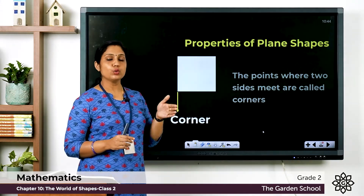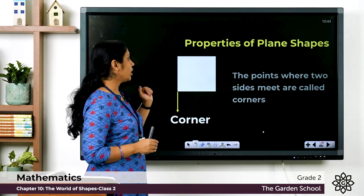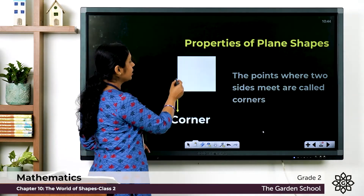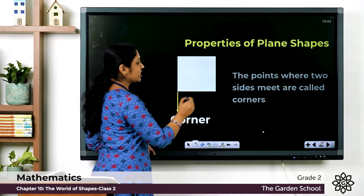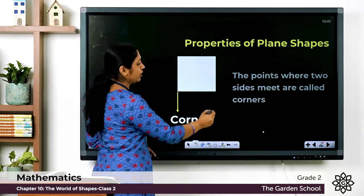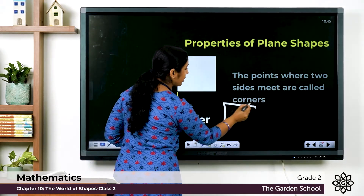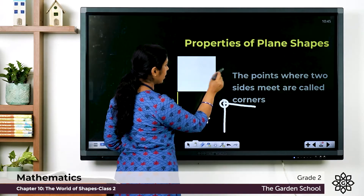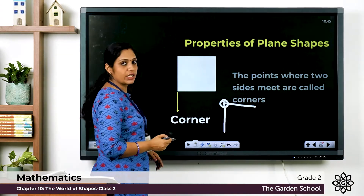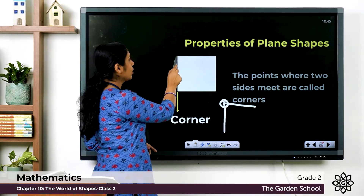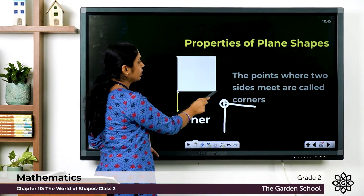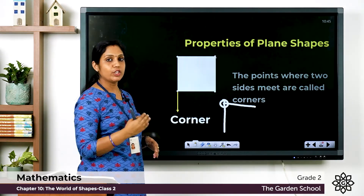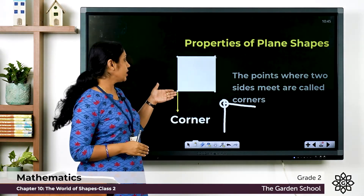The points where two sides meet are called corners. You can see that where two lines meet, that point is called a corner. In this figure there are four corners — one, two, three, four. So the corner is the point where two sides meet.